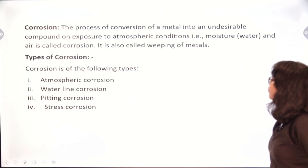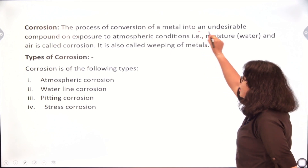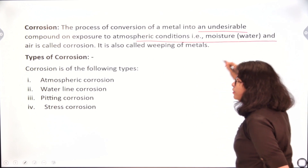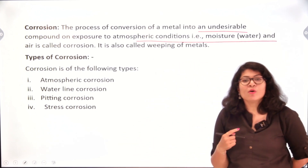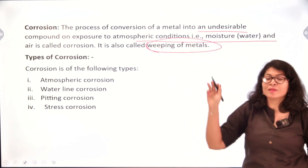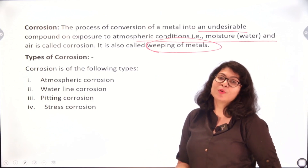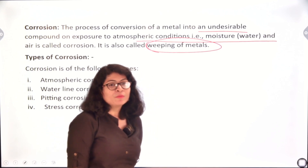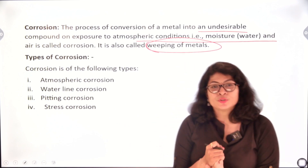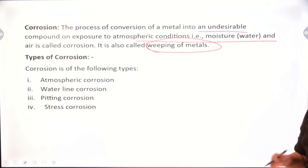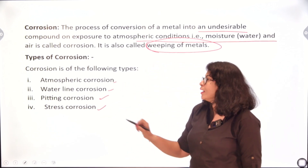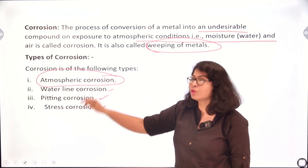The process of conversion of a metal into an undesirable compound on exposure to atmospheric conditions like moisture and air is called corrosion — it is also called 'weeping of metals,' because metals lose their essential properties, as if they are crying. Now, there are four types of corrosion: atmospheric corrosion, water line corrosion, pitting corrosion, and stress corrosion. The most important of them is atmospheric corrosion, so we will be taking that up in detail.